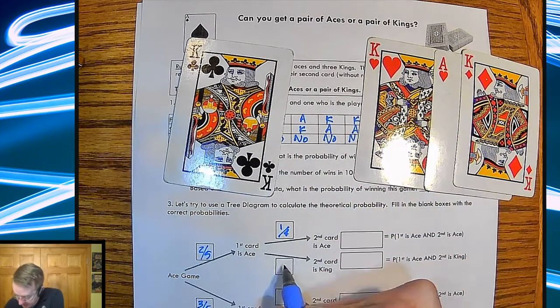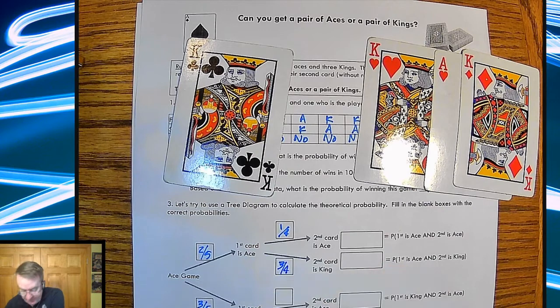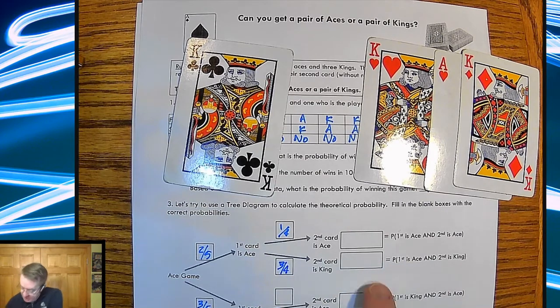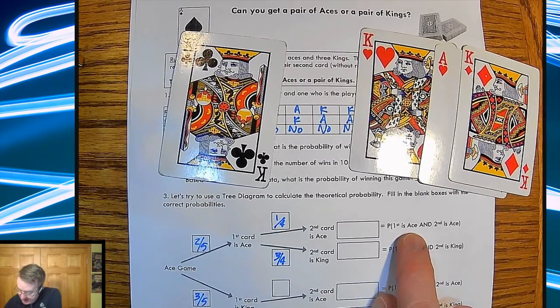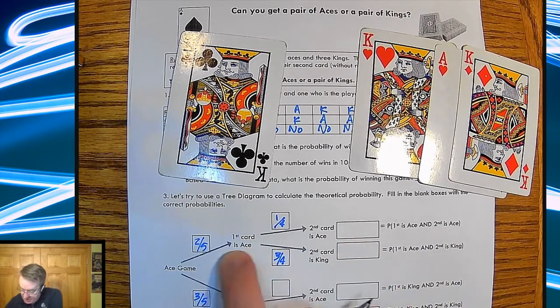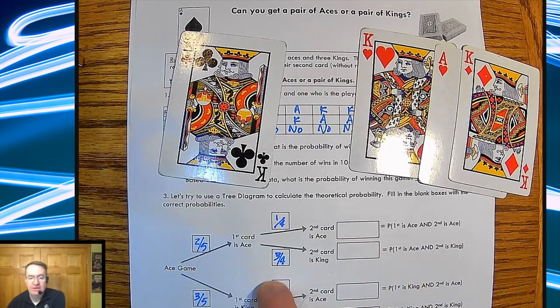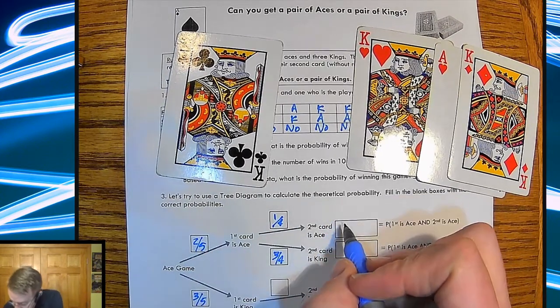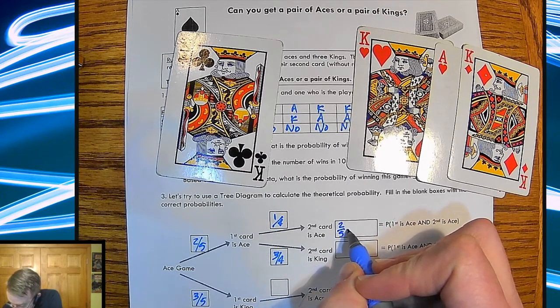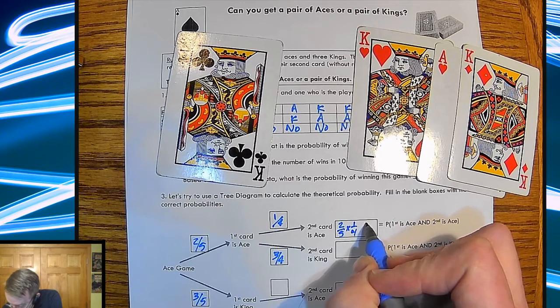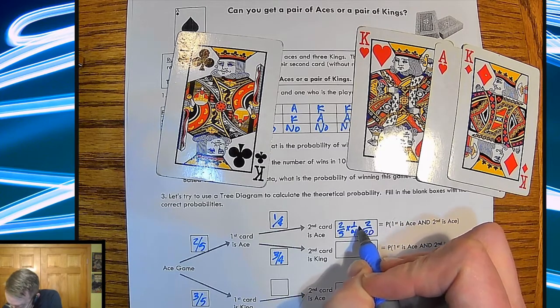All right, so the probability that the first is an ace and the second is an ace, you're going to multiply down these trees. So in this case here, this is going to become two fifths times one fourth, excuse me, and that's going to be two out of twenty.